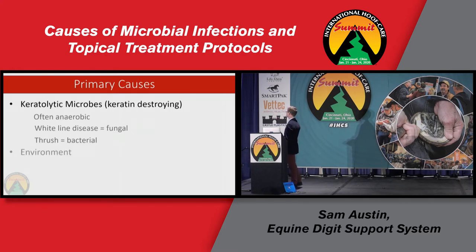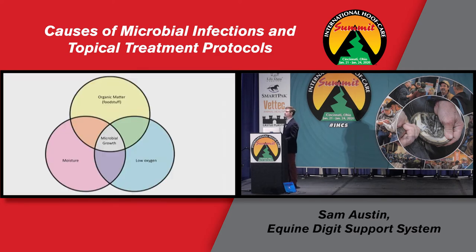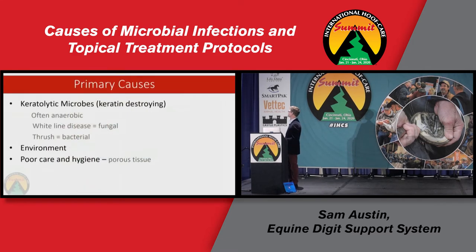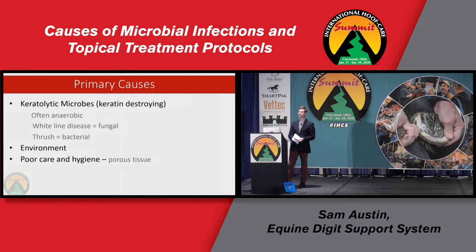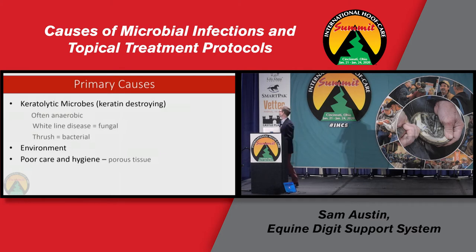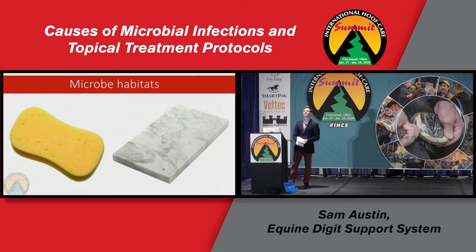Microbes cause the infections and they thrive in particular kinds of environments — usually warm, moist, low-oxygen atmospheres with high organic material levels. That can be feces or soil. It can also be the underside of the horse's foot, which provides a foodstuff and a habitat for them. Poor care and hygiene — lack of picking out the feet — produces more porous tissue for these microbes to live in.